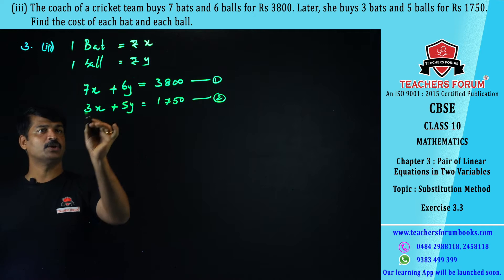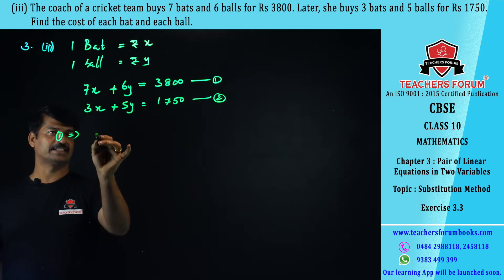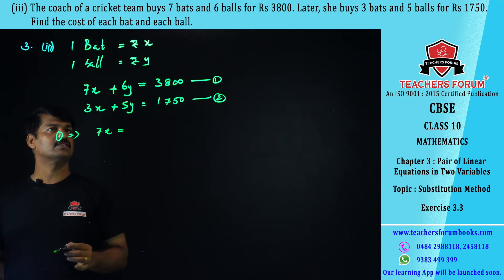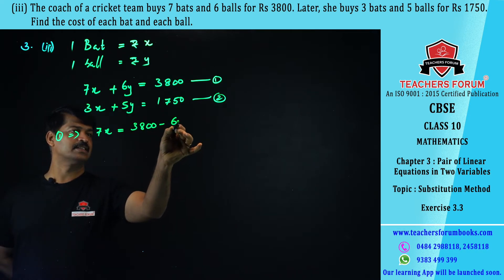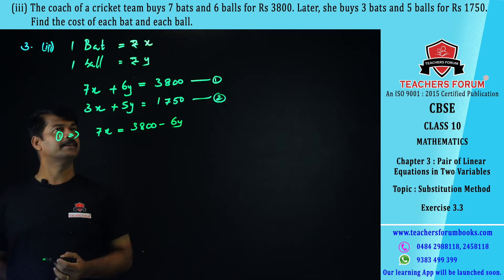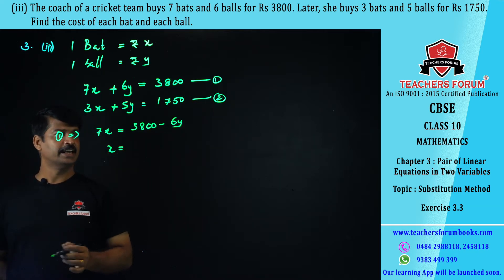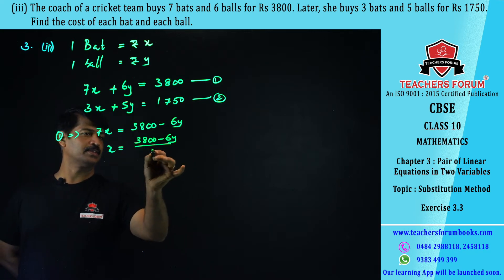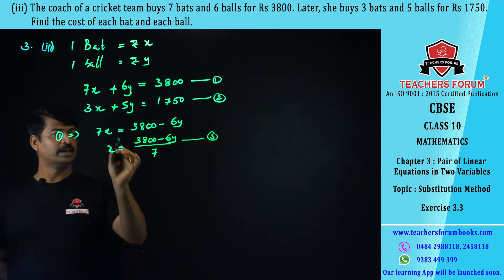From equation number one, we find 7x: 7x = 3800 − 6y. From here we get x = (3800 − 6y) / 7. Let this be equation number three. Now we substitute this value of x into equation number two.